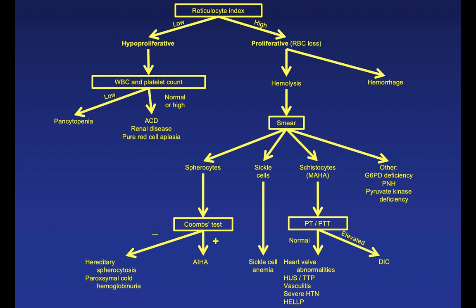Most of the time, in someone with a low reticulocyte count and normocytic anemia, the white count and platelet count will be normal or elevated. In that case, consider anemia of chronic disease or active inflammation, anemia of renal disease due to decreased erythropoietin production, or pure red cell aplasia, which is classically associated with a thymoma. On boards, if you see an anterior mediastinal mass on chest X-ray in a patient with a low reticulocyte count and normocytic anemia, think pure red cell aplasia.